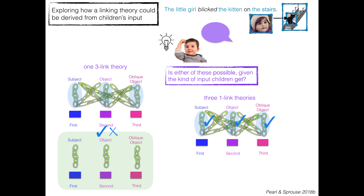We don't actually know which one children use — it's typically discussed this way, but it could very well be that other way. So we're going to investigate whether either of these acquisition tasks is possible given the kind of input that children get: can you get either one three-link theory or three one-link theories that correspond to what we think children will eventually acquire?